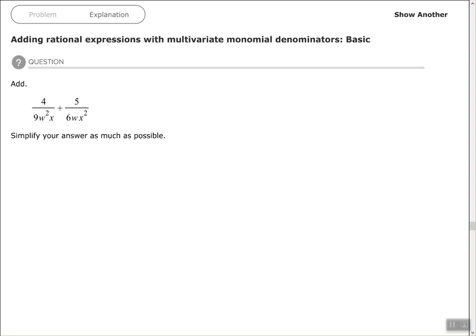Hey, good people. Arthur Morris here. Hope all is well. In this video we're going to look at adding rational expressions with multivariate monomial denominators, basic form. We have to add 4/(9w²x) + 5/(6wx²) and simplify the answer as much as possible. Step one: find